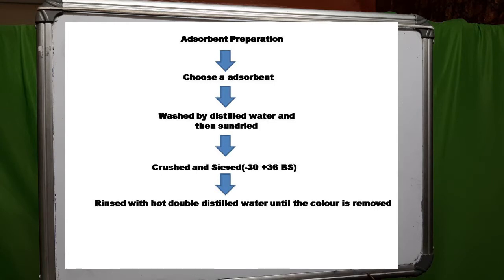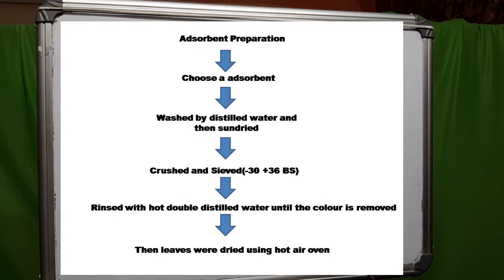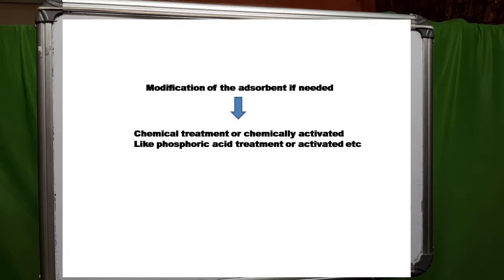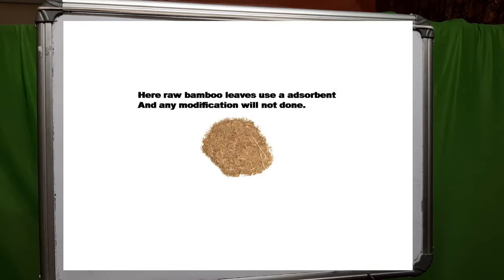The leaves were rinsed with hot double-distilled water several times until the color was removed. Then the leaves were dried using a hot air oven. After that, modification can be done if needed — modification means chemical treatment or chemical activation. Here, raw bamboo leaves are used as the adsorbent and no modification is needed.